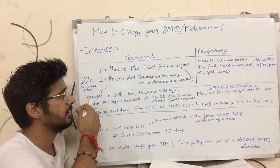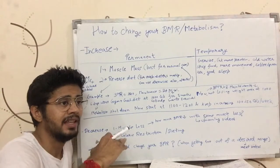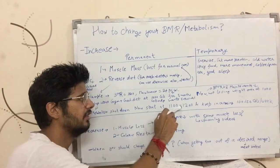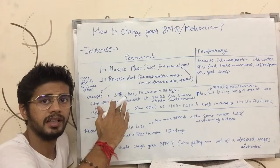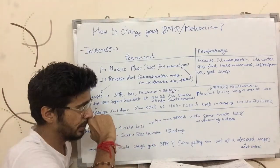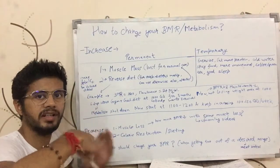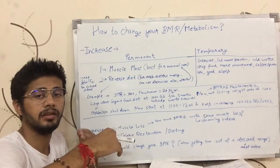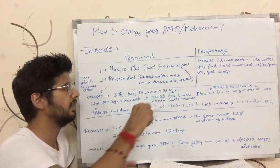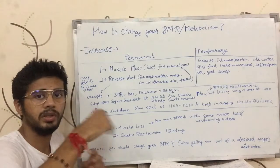Now what should this lady do? She should start at around 1100 or 1200 calories and increase by 100 to 150 calories per 7 to 10 days. As she increases the calories, her body would start burning more energy again because she is getting energy in surplus. So eventually she can reach back to 2415 calories of maintenance by slowly increasing the calories.